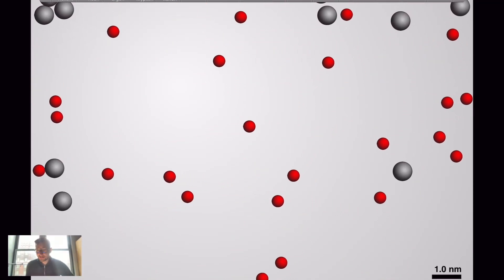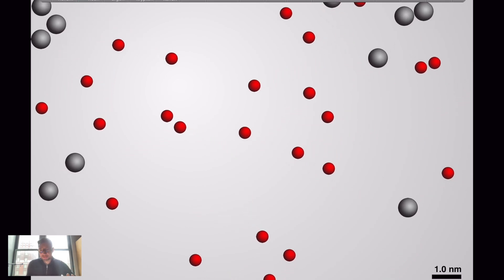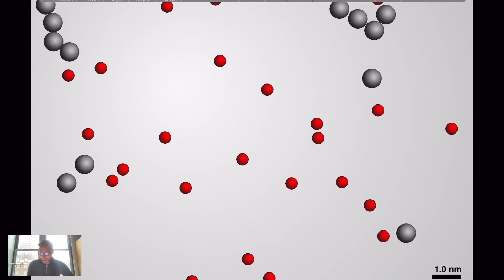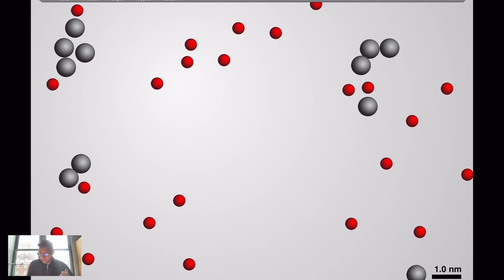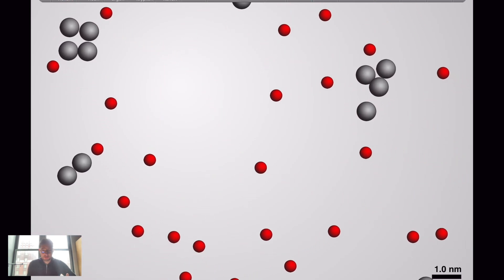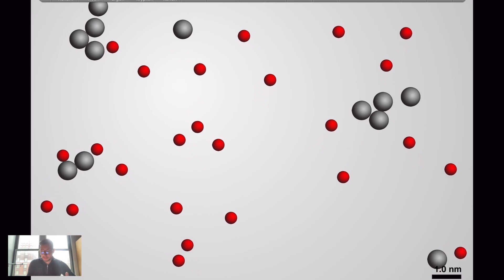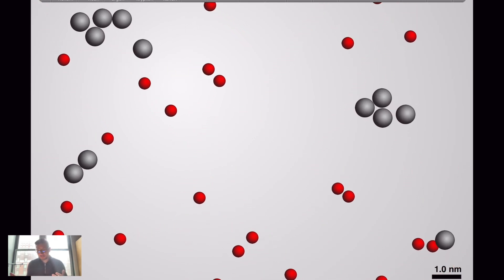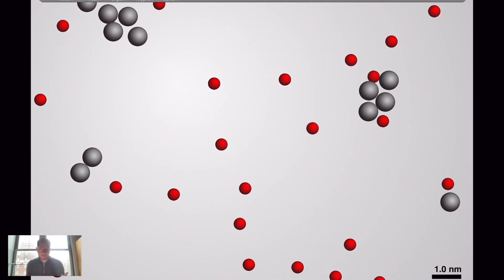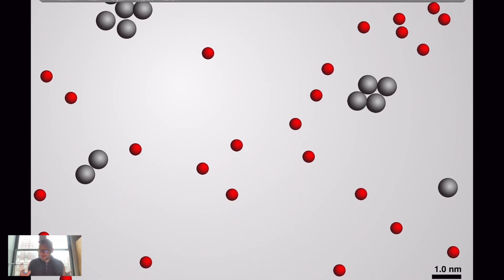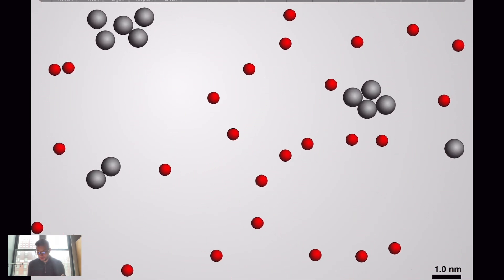Hey there, chemists. In our last lesson we were talking about the difference between real gases and ideal gases. We looked at an animation and saw how particles can have forces of attraction which caused them to behave less ideally in the gas phase — we see things like different pressures than what we would normally calculate from the ideal gas law. We haven't yet talked about what those forces of attraction are. That's what today is all about.